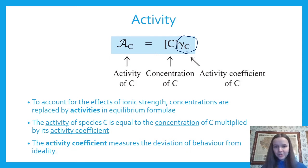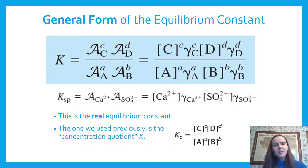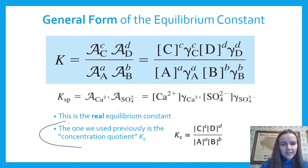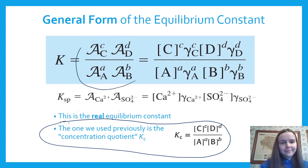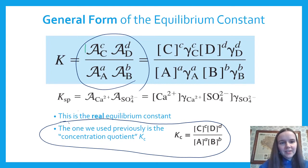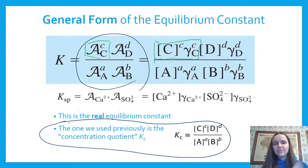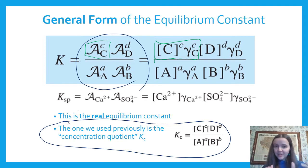Our equilibrium constants that used concentrations raised to the power of the coefficient are approximations. The real equilibrium constant uses activity, not concentration. Since activity equals concentration times the activity coefficient, for example Ksp of calcium sulfate is the activity of Ca²⁺ times the activity of SO₄²⁻, which means it's the concentration times the activity coefficients. Every equilibrium constant equation becomes twice as complicated because you have to include both concentration and activity coefficient.